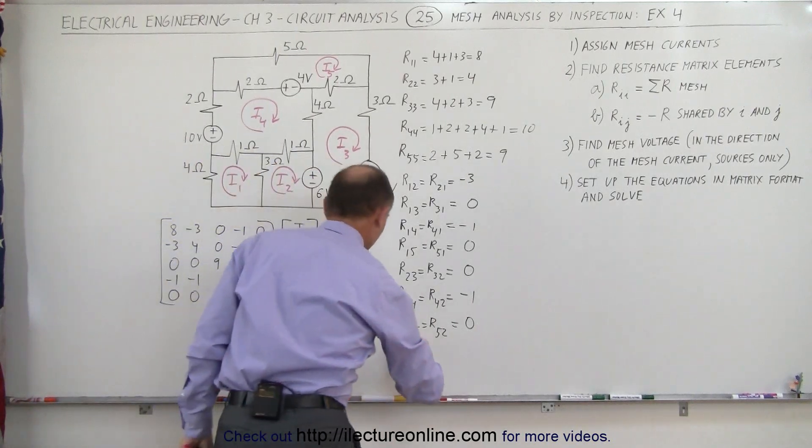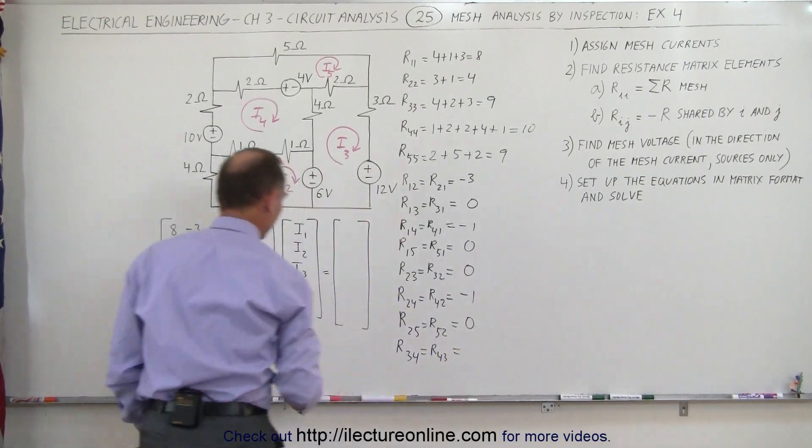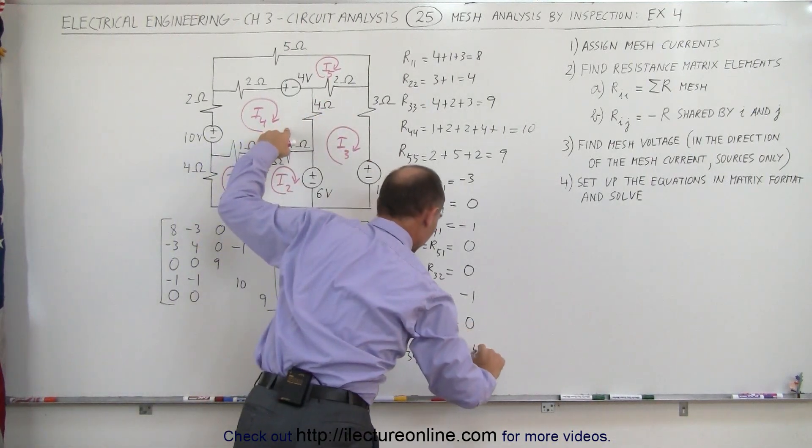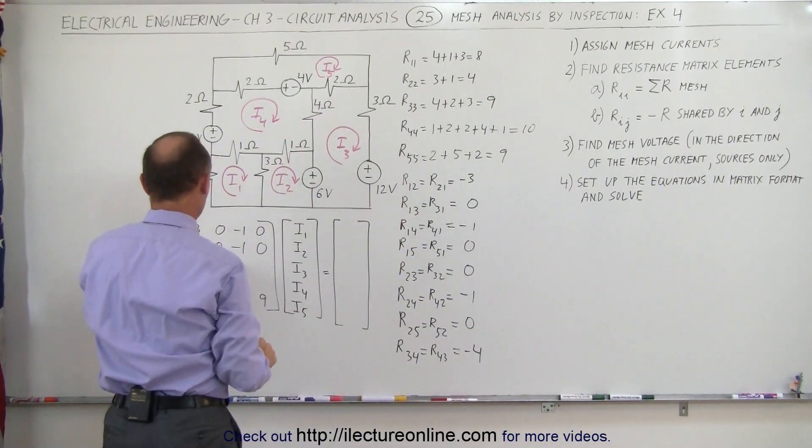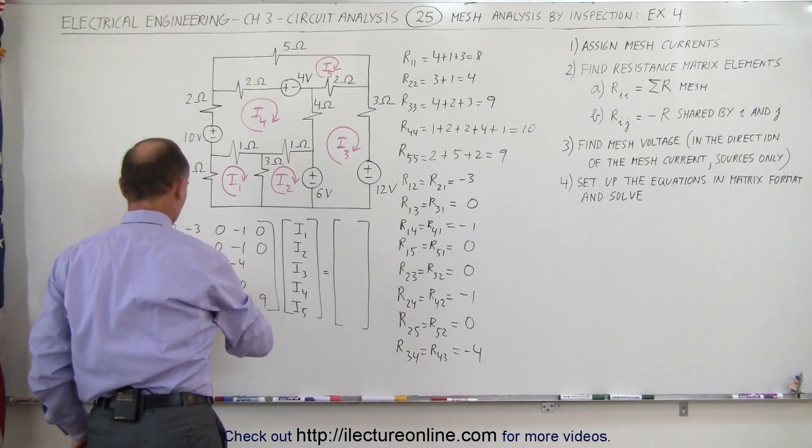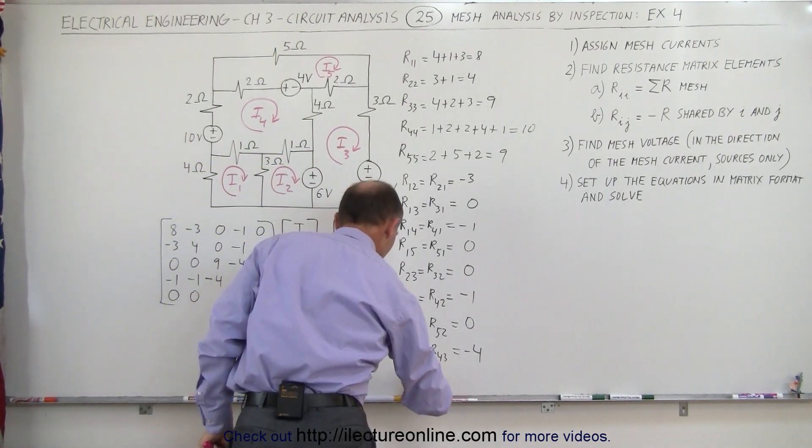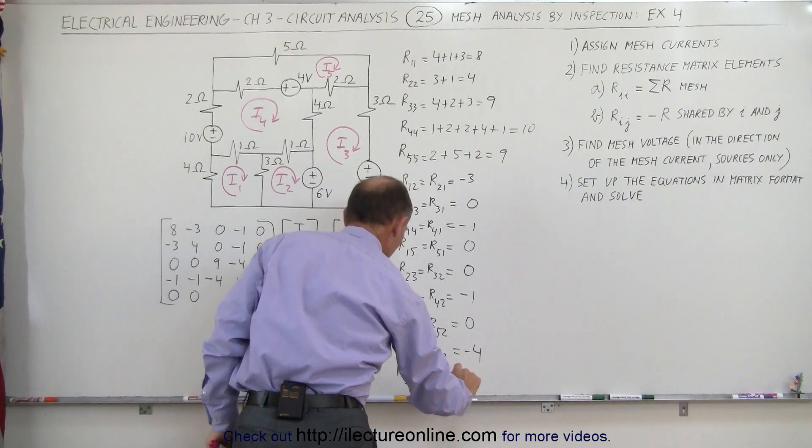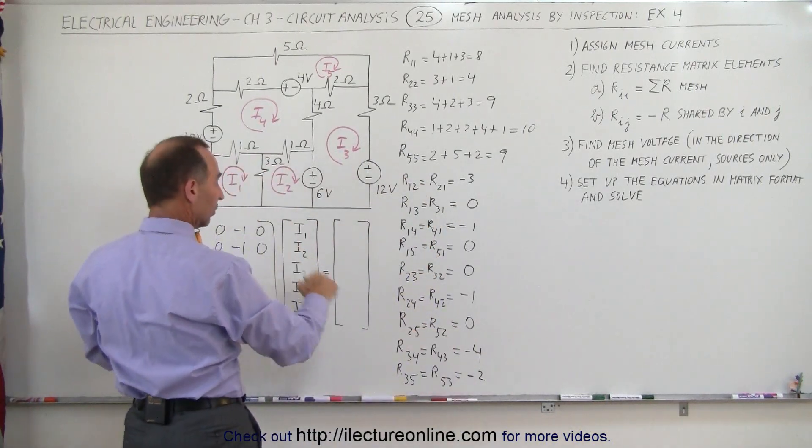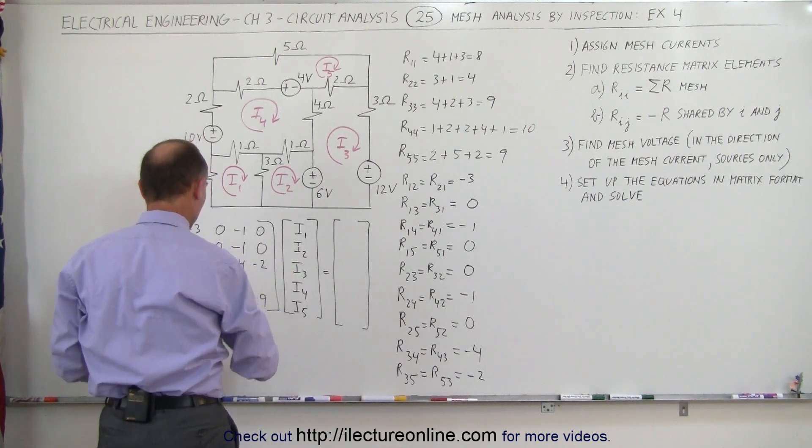We're almost there, just a few more. How about R34? That's equal to R43. Meshes 3 and 4 share a 4 ohm resistor, that's minus 4. And how about R35, which equals R53? Between 3 and 5, we do share a 2 ohm resistor, that's minus 2. Always put a negative in front of that.